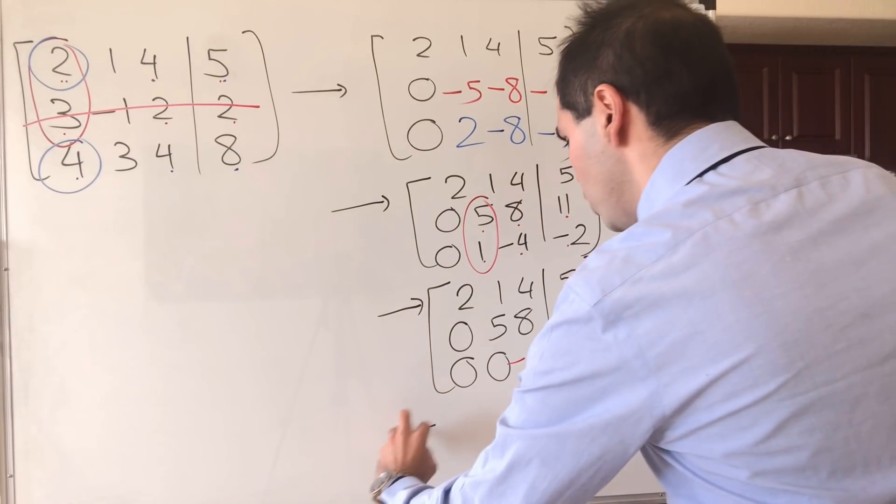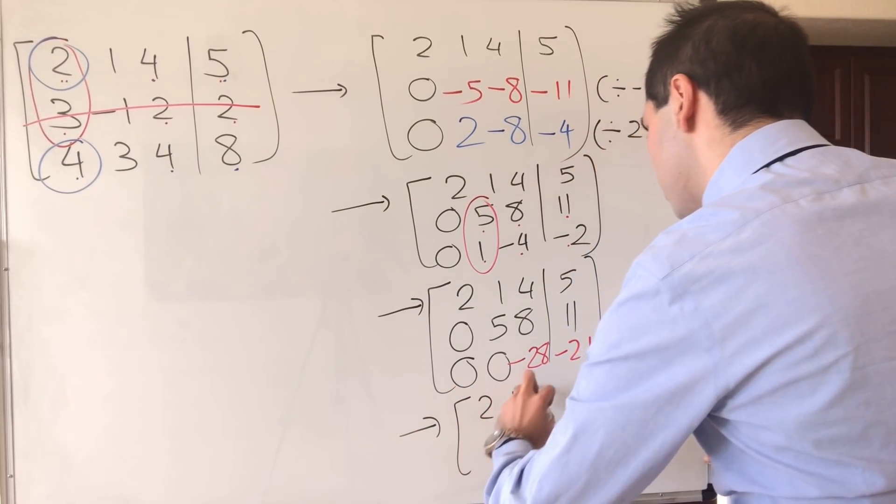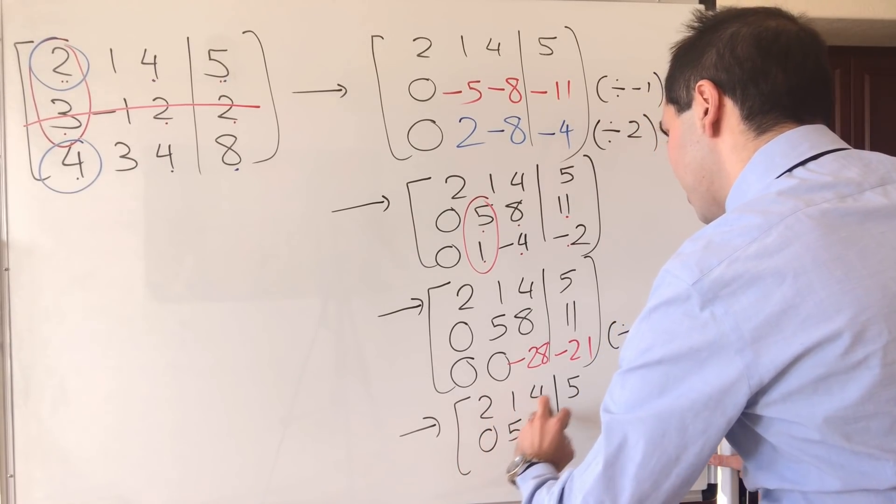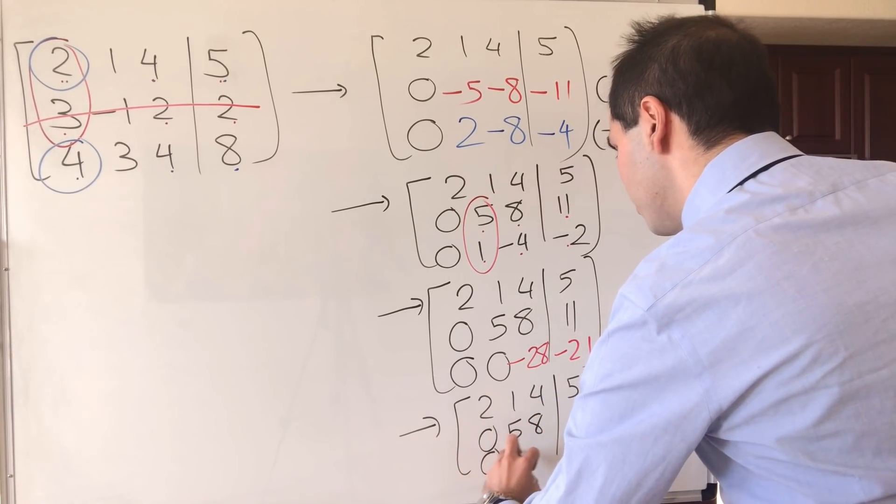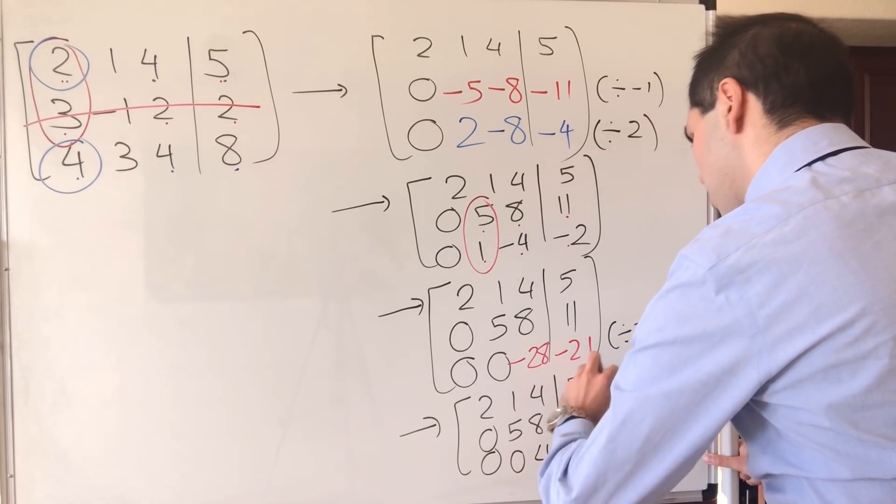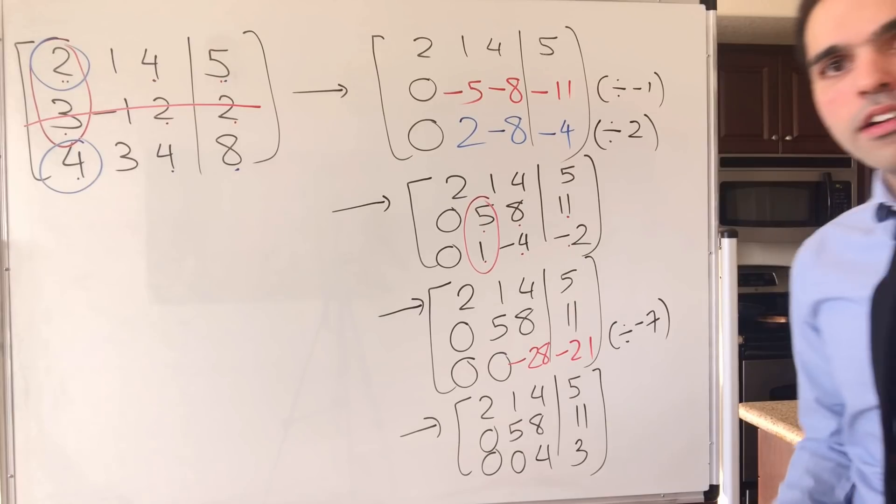So divide this by minus 7, and you end up getting 2, 1, 4, 5, 0, 5, 8, 11. And then, 0, 0, 4, and 3.